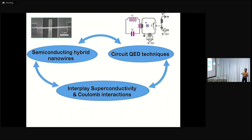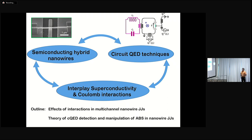This has been already introduced by Ugg. The outline of my talk is going to have two parts. One in which I discuss the effects of interactions in a multi-channel nanowire junction. And the second one, if time allows, I give some idea of the theory of CQED detection of these states — not only the line shapes, but also the intensities and how we can understand them from the point of view of theory.